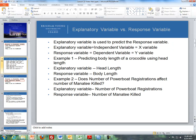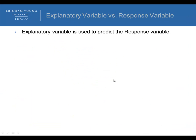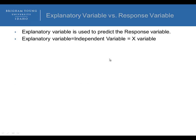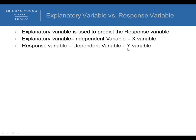The difference between an explanatory and a response variable: an explanatory variable is used to predict the response variable. The explanatory variable is also called the independent variable or the x variable. The response variable is also referred to as the dependent variable or the y variable. The x variable appears on the horizontal axis of a scatter plot, and the y variable is on the vertical axis.